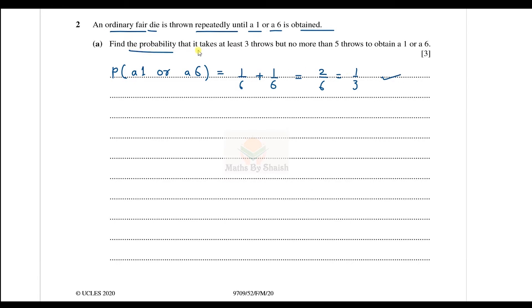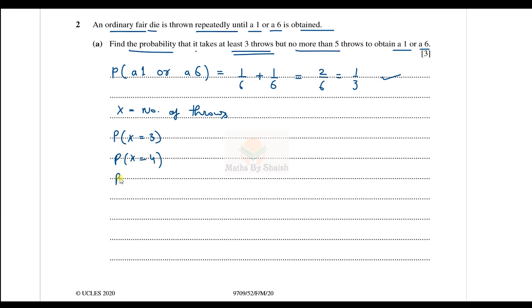The question asks: find the probability that it takes at least three throws but no more than five throws to obtain a one or a six. Let X be the number of throws to get a one or a six. We need to calculate for X = 3, X = 4, and X = 5, then add them together. So we find the probability of getting a one or a six on the third, fourth, and fifth throw respectively.